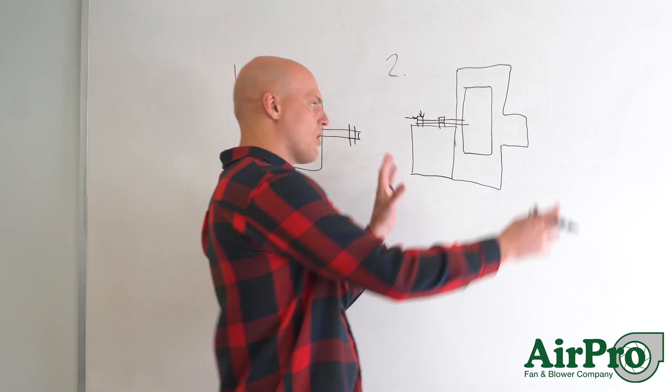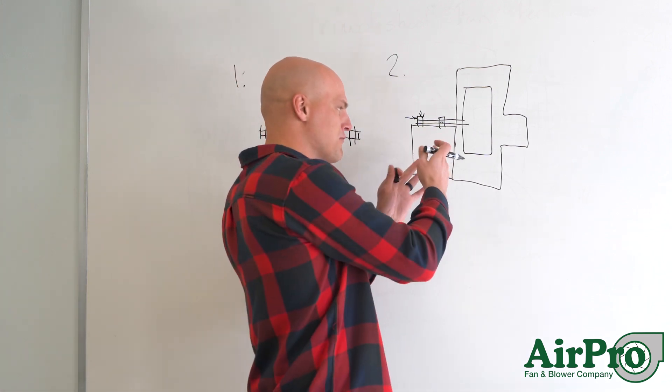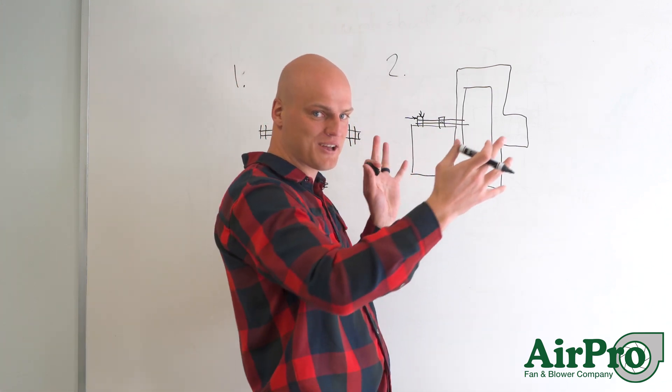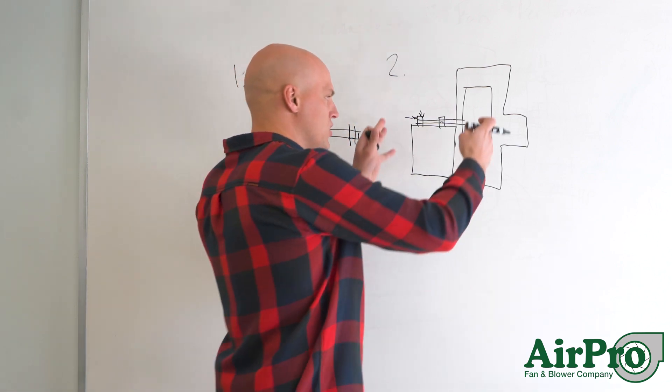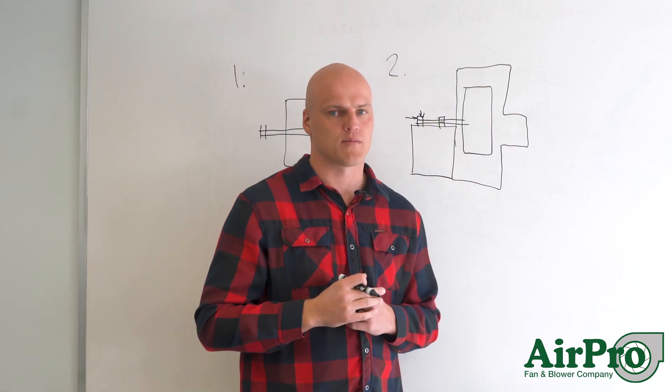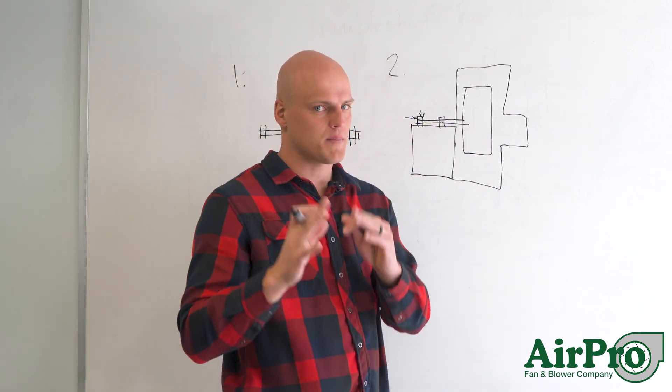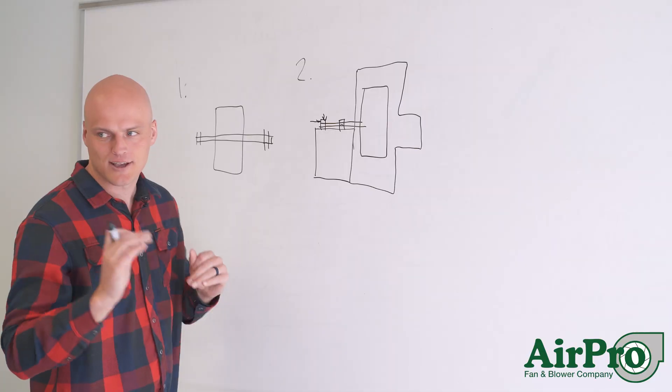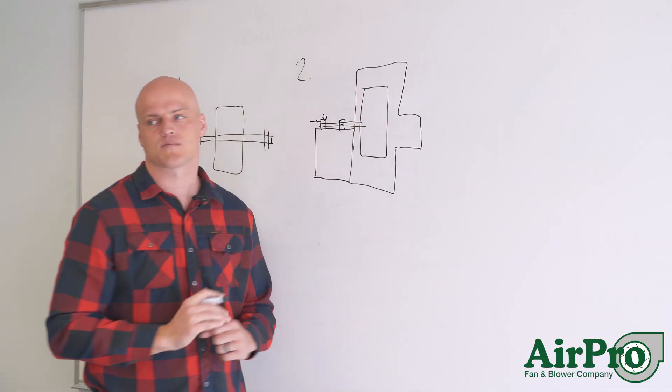But when you put the whole system together, sometimes there are variabilities with how the whole fan comes together to where even a really balanced wheel, you run it over here and you're still over the vibration limit you need to be at. So once you're over here, usually the balance is not nearly as severe as what you have to do over here. But you'll still have to do some tweaks to the wheel.